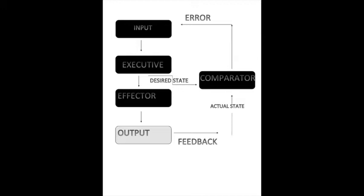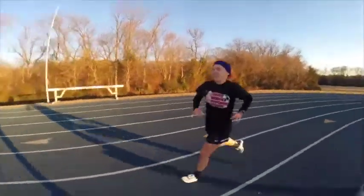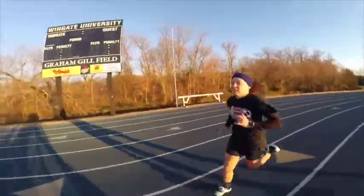Unlike open-loop control systems, where it would be a quick start and end motion, you have the opportunity for feedback. For a runner running laps for a mile, they have the time to adjust at each lap. They can gather information on whether they're going too fast or too slow or have poor form, and they have the ability to take that feedback, change it, and go through the whole entire process over again. And that's basically your closed-loop system.